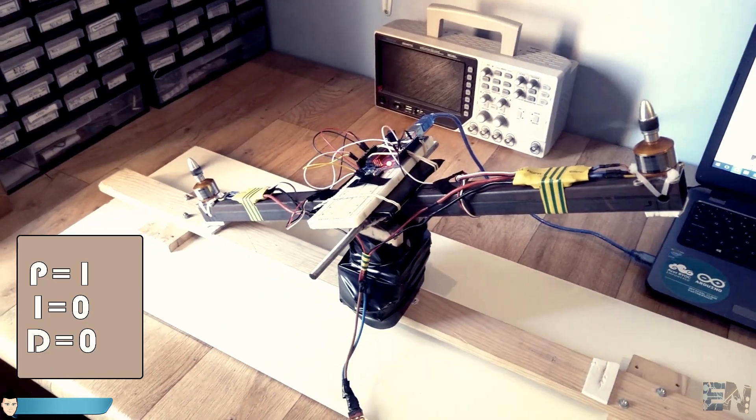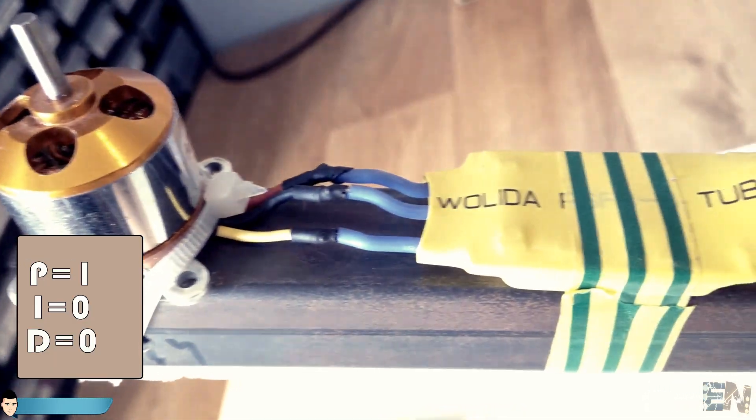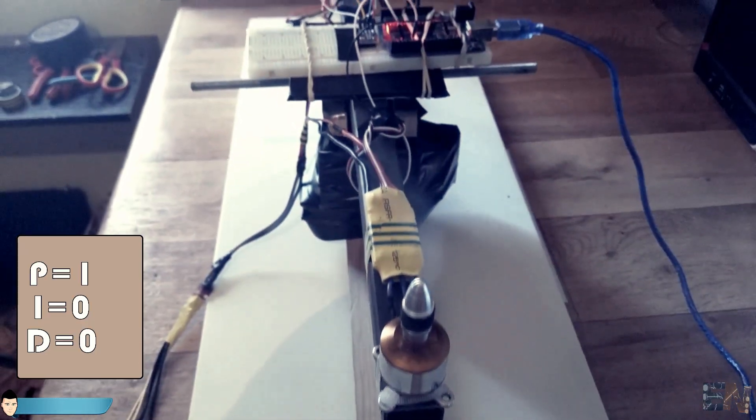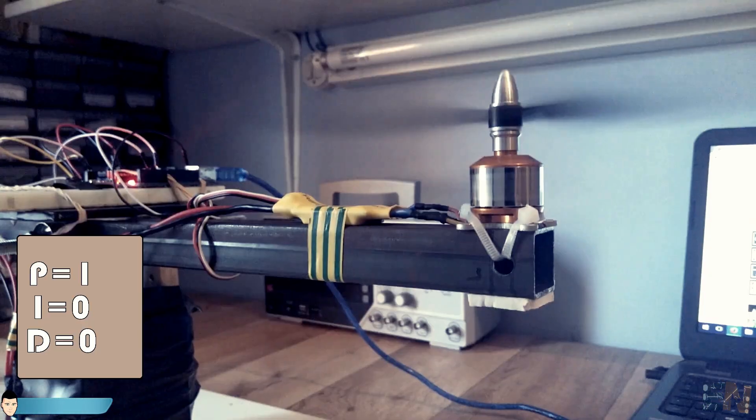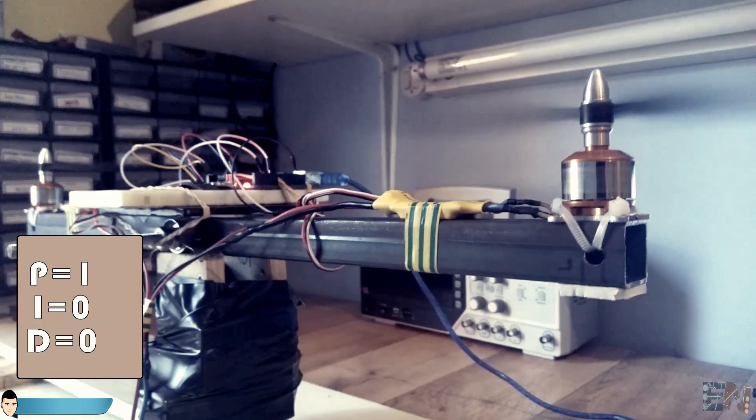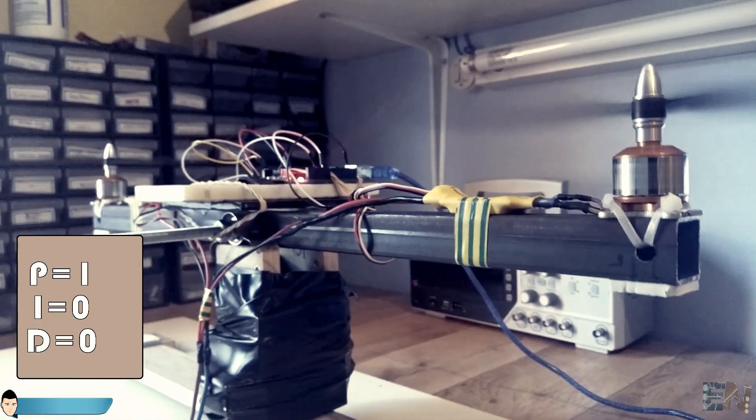Now we know that we should apply a 1000 to 2000 microsecond signal to the ESC in order to spin the motors where 1000 is no spinning at all and 2000 is full throttle. These values may vary depending on your used ESC.